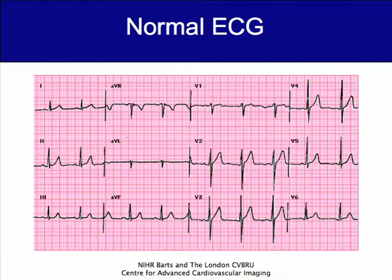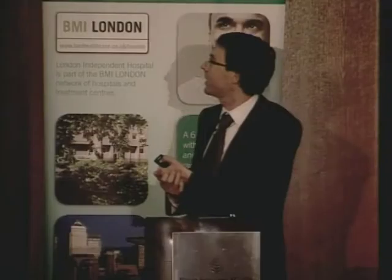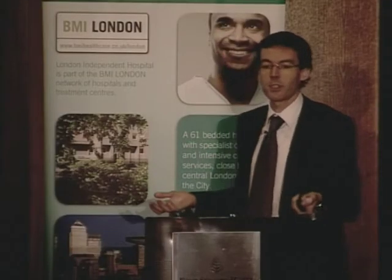This is a normal 12-lead ECG — a fairly standard configuration with the anterior chest wall leads and the limb leads. This is not a normal ECG. You can see totally disordered random electrical activity, and that's an ECG of VF. It's unusual in that it's a 12-lead ECG.